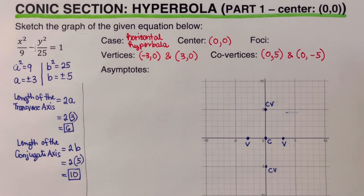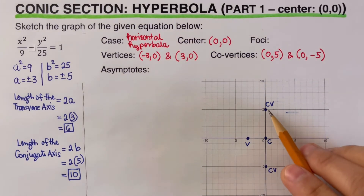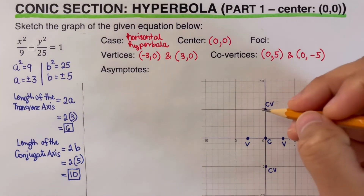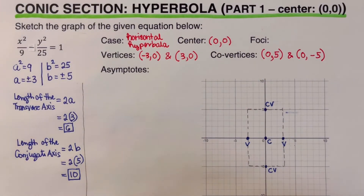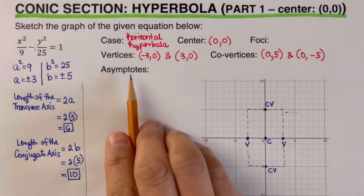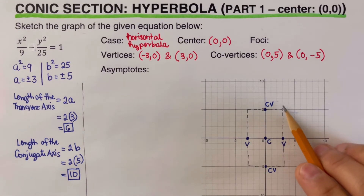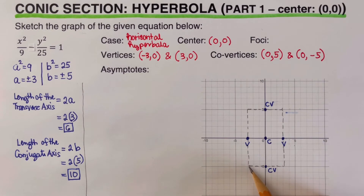Now we're ready to sketch the rectangle that covers all four points — the two vertices and the two co-vertices. The asymptotes of the hyperbola are the diagonals of this rectangle, extending further outward. Let's draw those two asymptotes.